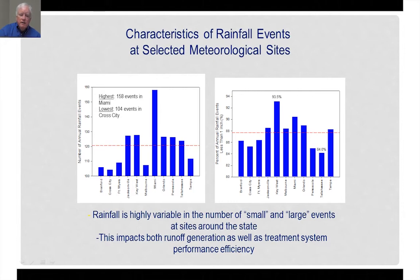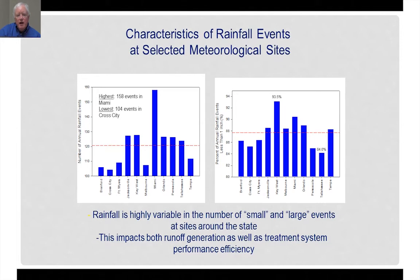We also looked at how these events might affect runoff characteristics by examining events less than one inch. In Key West, 93.5% of events on an average annual basis are less than one inch, meaning only a small number exceed that threshold. In the Tallahassee area, 84% of annual rain events are less than one inch, with 16% representing substantially larger events. This impacts runoff generation as well as treatment system effectiveness for systems such as retention ponds.